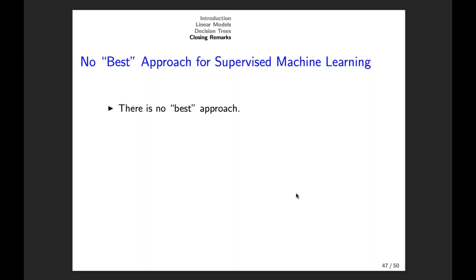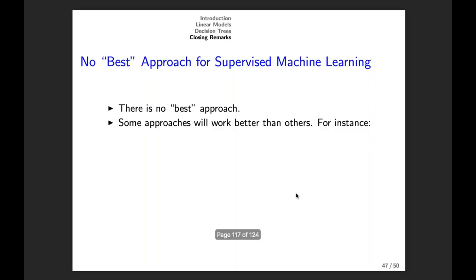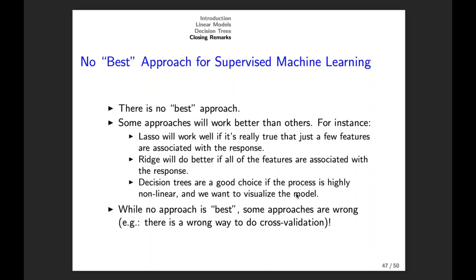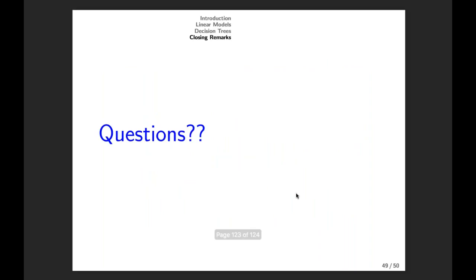Finally, if you're doing supervised machine learning, there's no best approach. I've talked about a number of methods, and there are literally textbooks filled with supervised machine learning approaches. Sometimes one approach will work better than another. But some approaches are wrong — for example, you could do cross-validation incorrectly, leading to a wrong test error estimate and choosing a really bad model. No approach is best, but some are wrong. If you get one thing from this lecture, it should be that test error is really important and you've got to make sure you're calculating it correctly. A model that has a high test error is just meaningless and not useful in any context.